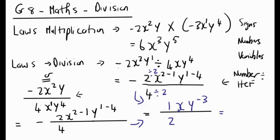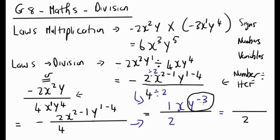Now I'm applying a different law: whenever we have a negative exponent, we can move that term from the numerator to the denominator and make the exponent positive. So y to the power of negative 3 in the numerator becomes y to the power of 3 in the denominator. The final answer is x over 2y cubed.